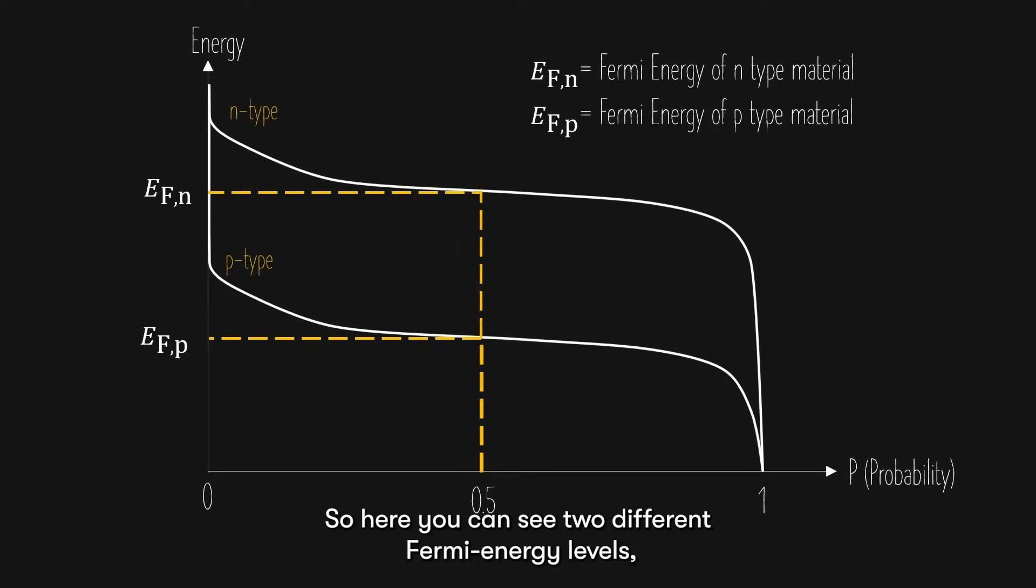So, here you can see two different Fermi energy levels, one for p-type and one for n-type, each corresponding to a probability of 0.5 in their respective semiconductors. We can see that the Fermi energy level is higher for n-type materials compared to p-type materials.